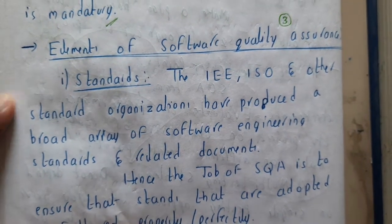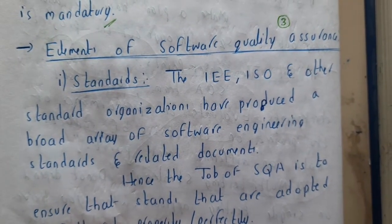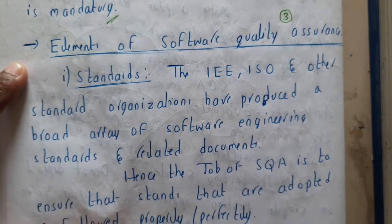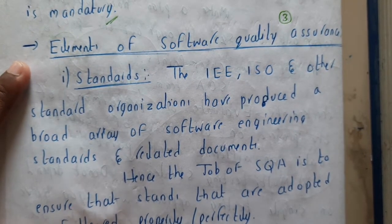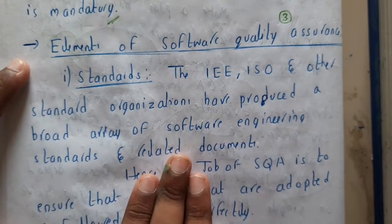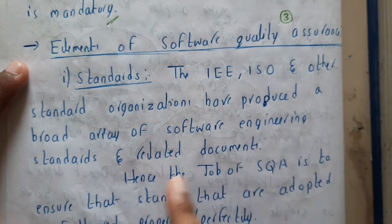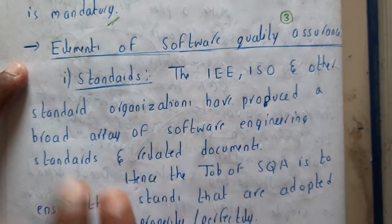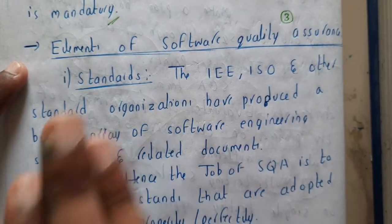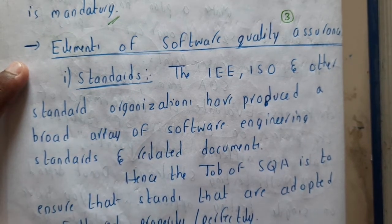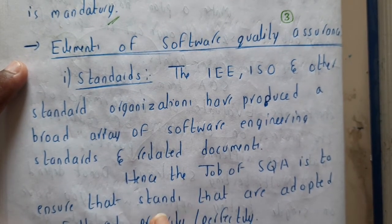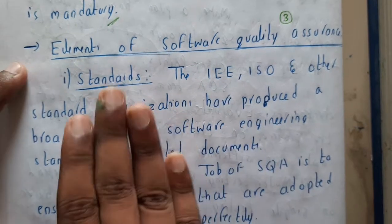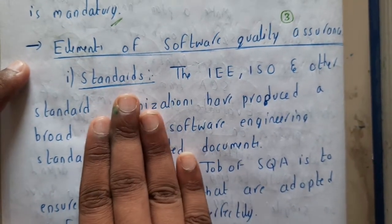Hello guys, we are back with our next lecture. In this lecture, let us go through the elements of software quality assurance. Like any kind of operation, it will have goals, standards, and elements. In this lecture we go through the elements, and in the next lecture we will go through the goals of software quality assurance.